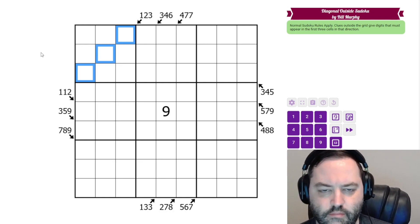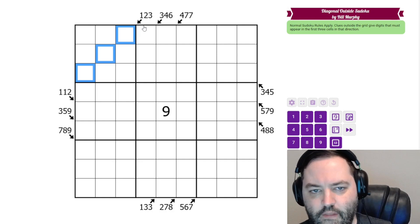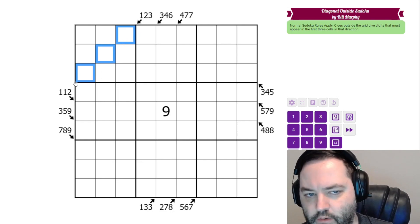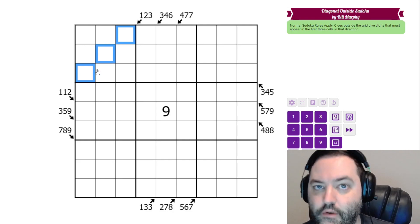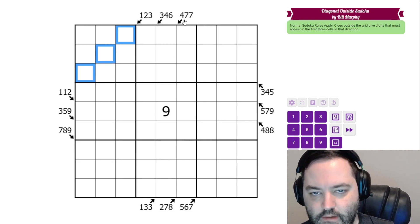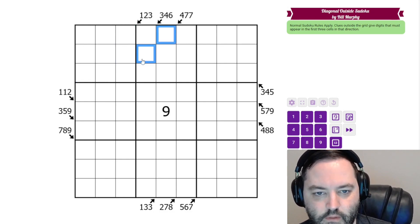You could have this constraint with, say, only two digits, and that would just say 1 and 2 must appear in these three cells, but not give a constraint on what third digit. Some of the clues have repeated digits, and that just means that digit has to repeat in those three cells.